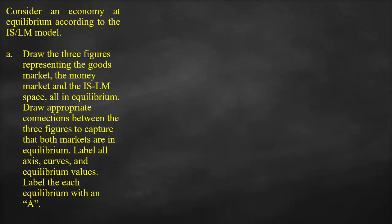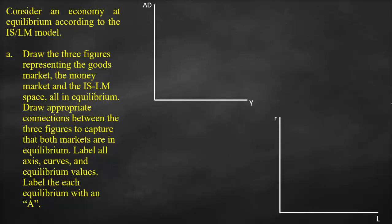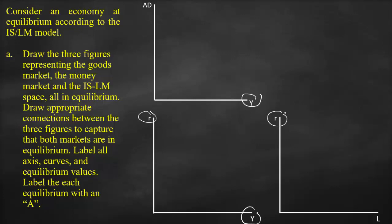We will start by drawing the three markets: the goods market, money market, and ISLM market. In the goods market, the y-axis is aggregate demand and the x-axis is output. In the money market, the y-axis is the real interest rate and the x-axis is money demand. In the ISLM space, the y-axis is the real interest rate and the x-axis is output. Note that the goods market and ISLM share the same output axis, and the money market and ISLM share the same real interest rate axis.